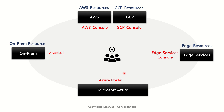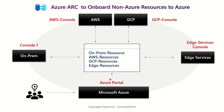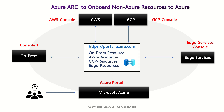What if I say I can help you implement a service that can manage all these resources from one single console? The service that helps us achieve this is Azure Arc, and all these resources can then be managed from one single console — portal.azure.com. In a nutshell, you can use Azure Arc to onboard non-Azure resources to Azure and manage everything from one place: VMs, Kubernetes clusters, SQL servers, and other supported resources.